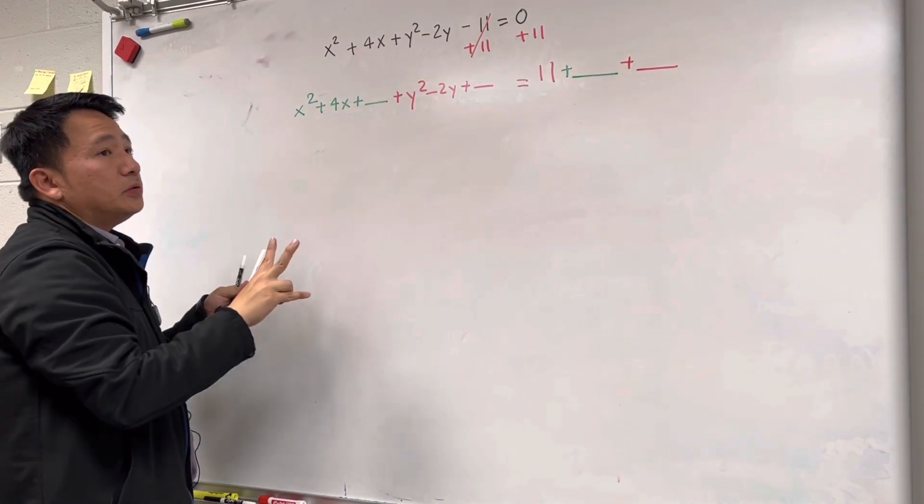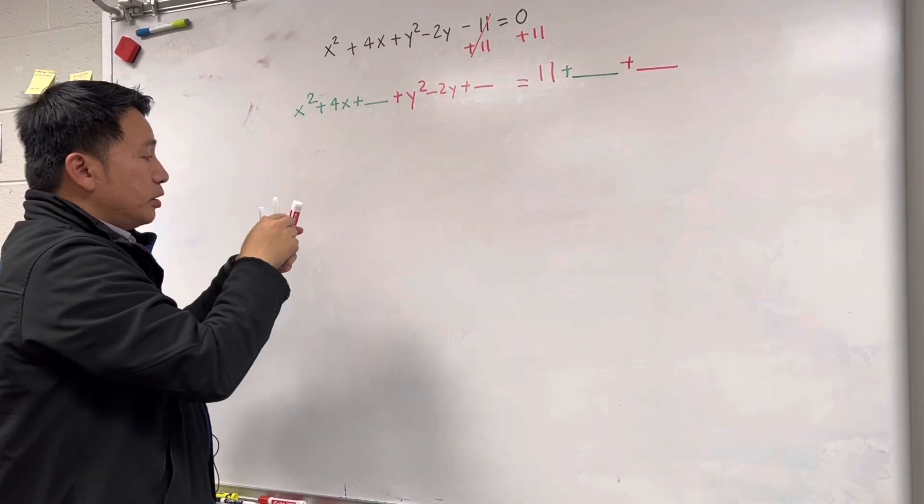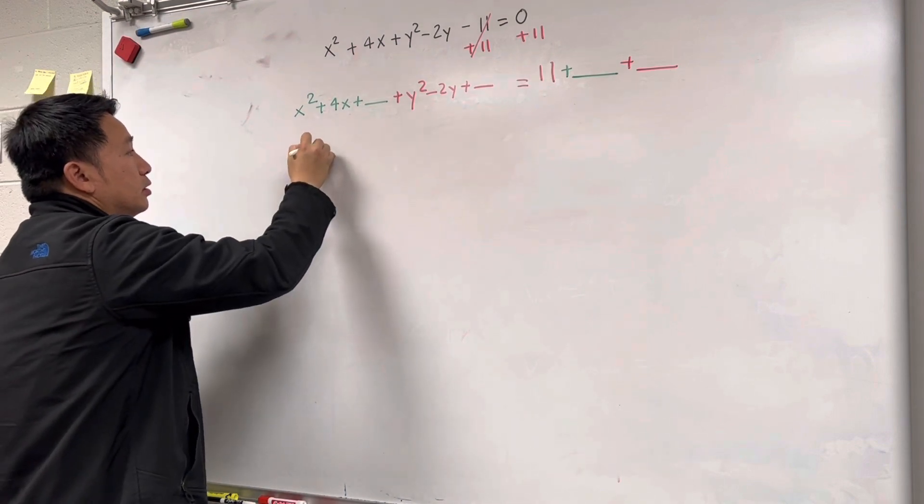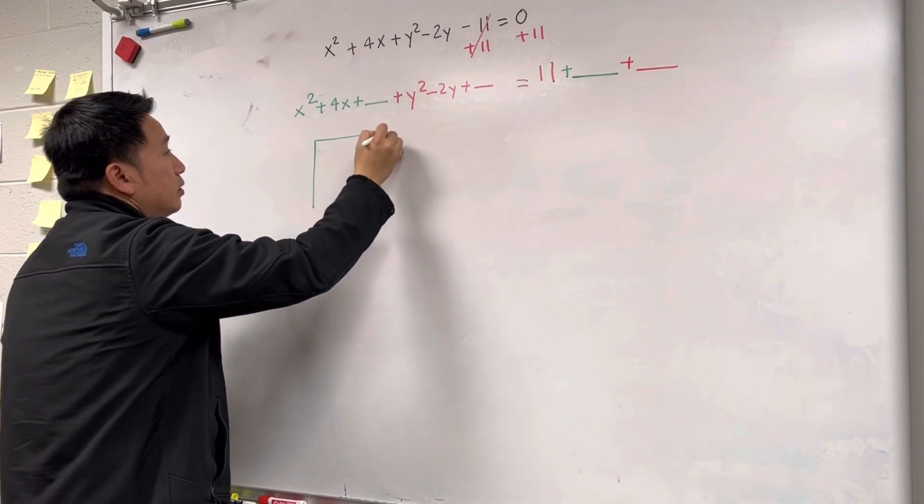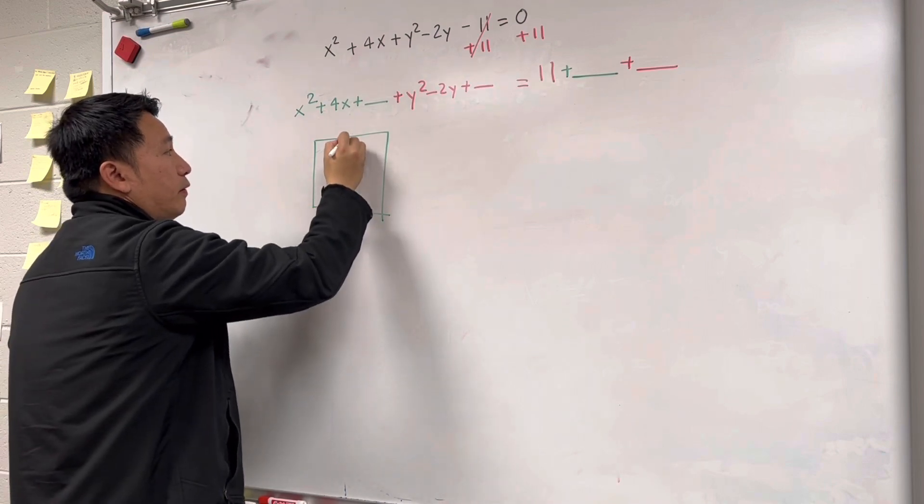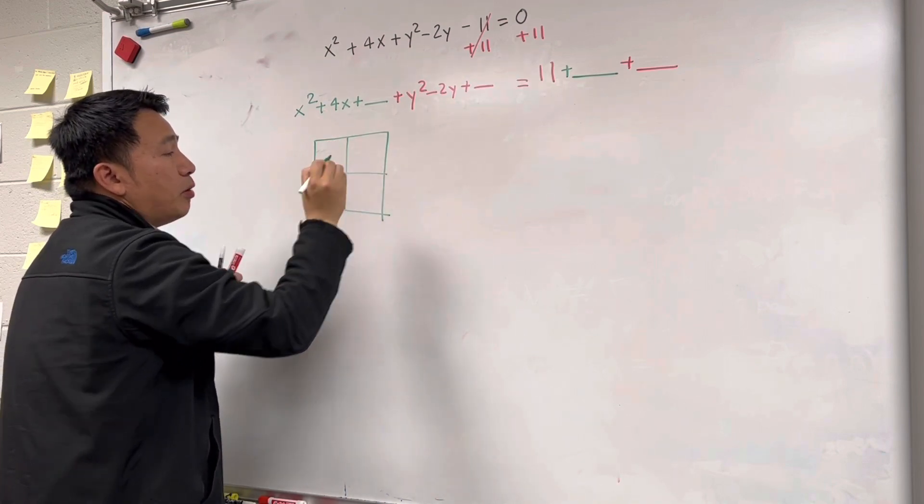Now, step 2, I'm going to use the box method. This is for me the easy and very simple method for completing the square. So we need 2 boxes.